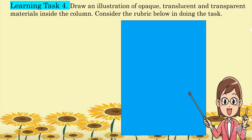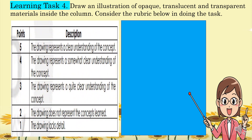For learning task four, draw an illustration of opaque, translucent, and transparent materials inside the column. Consider the rubric: five points if the drawing represents a clear understanding of the concept; three points if fairly clear; two points if it does not represent the concepts; and one point if the drawing lacks detail.